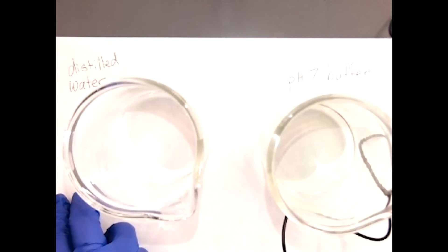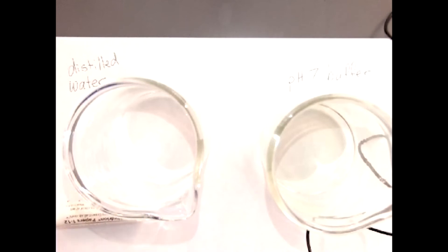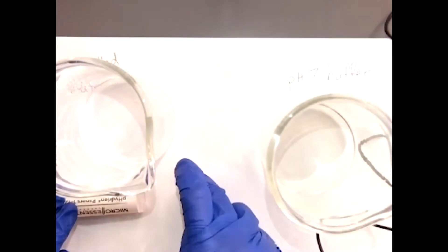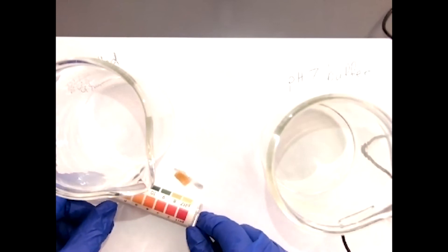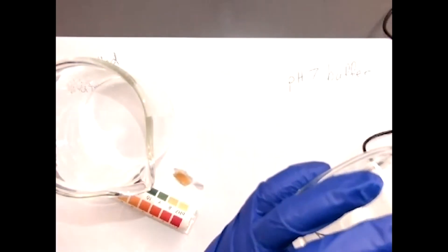Next it says to measure and record the pH of each. Grab our pH paper. We are just verifying that both of these actually have a pH at or near seven. All right, pretty much no color change there, so that's going to be about a seven. And buffer, this one's a bright yellow, so that is definitely seven.